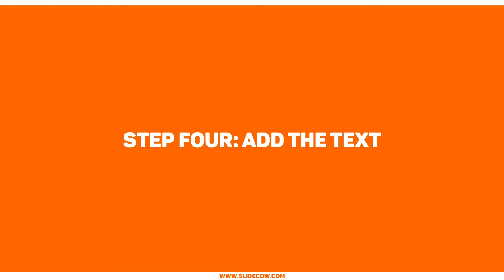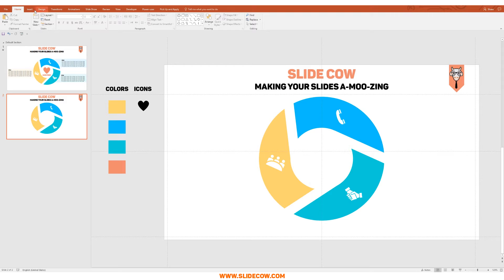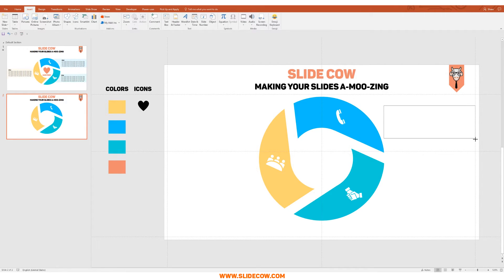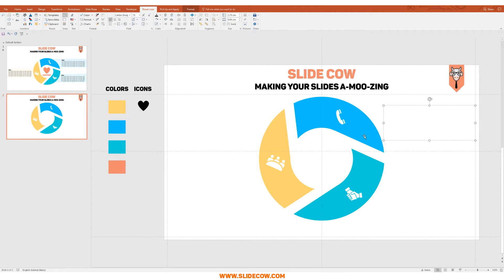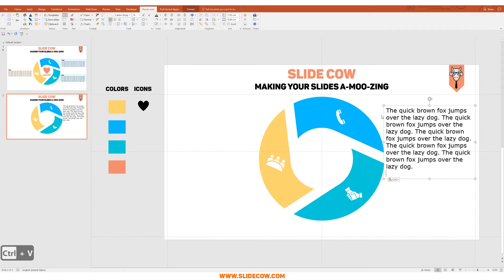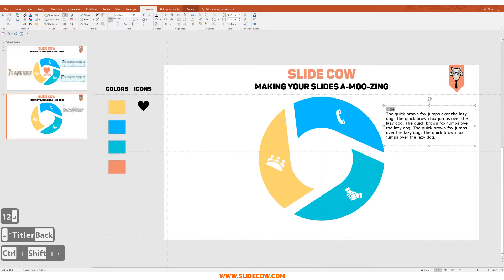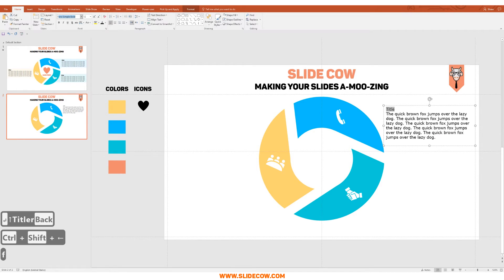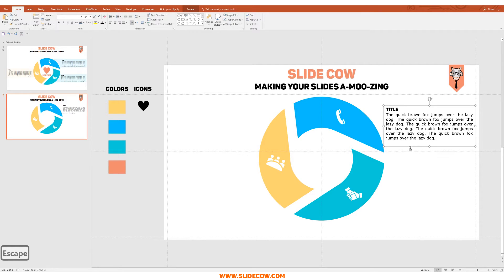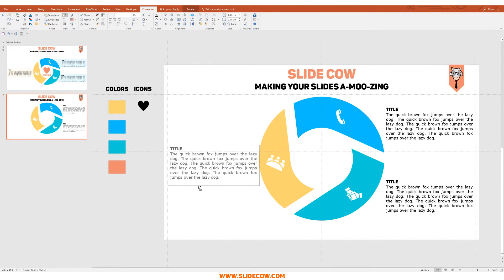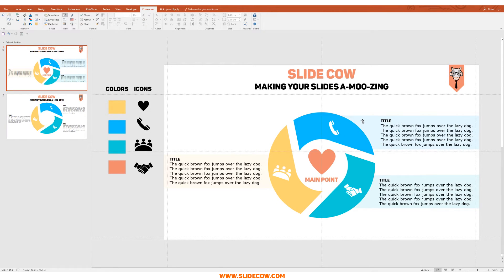Step four: add the text. Go to Insert > Text Box and draw out a text box — make sure it isn't touching the infographic. Add some placeholder body text, change the font size to 12, then press Enter, type a title, change the font to Paxton Black Caps, and set the size to 14. Do the same for the green section and the yellow section. Now we're going to create a background effect where the color of the text area matches the corresponding infographic section to show which text correlates to which point.